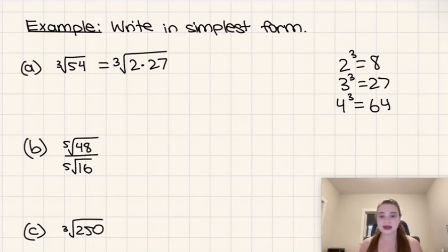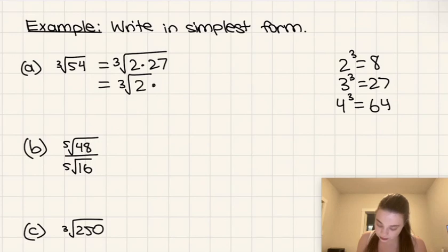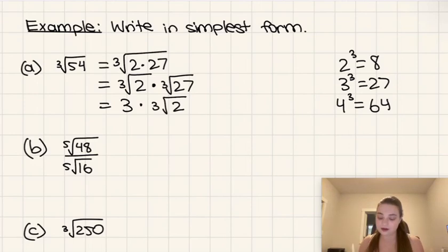Then using the multiplication property, or the product property rather, we can change this to cube root of 2 times cube root of 27. And then the cube root of 27, as we know, is 3, right? So this is just 3 times the cube root of 2, and that would be our final simplest form of this here.